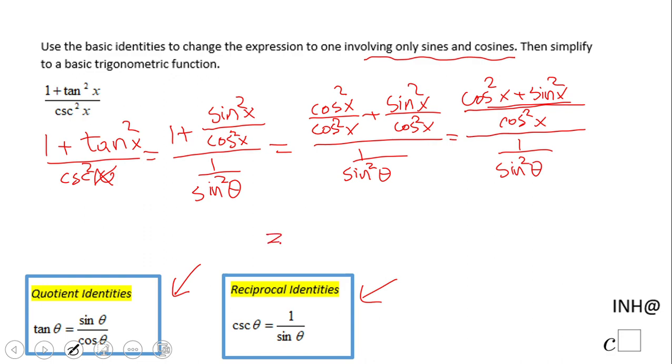What we notice here is this is a Pythagorean identity: cos²x + sin²x = 1.